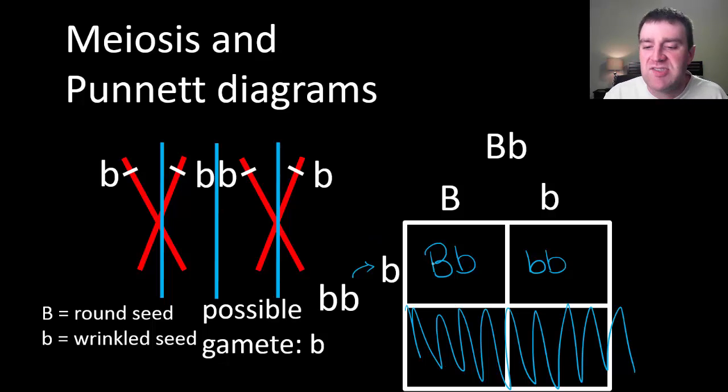And so what does a Punnett diagram really tell you ultimately? It sort of says that for each offspring that's produced, each little box here represents the possibilities that each offspring might turn out. So let's say you're producing a seed offspring in this plant species, there would be a one in two chance that each offspring would turn out this way, heterozygous and round seeded. And there's also a one in two chance that each offspring would turn out this way, which is homozygous recessive and wrinkled seeded.